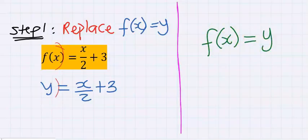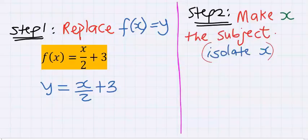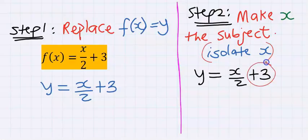Step number two: make x the subject, that is isolate x. Next, take plus three across and it becomes minus three.